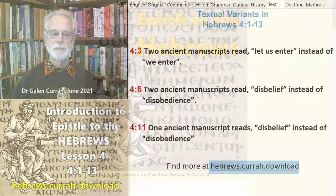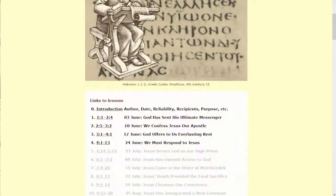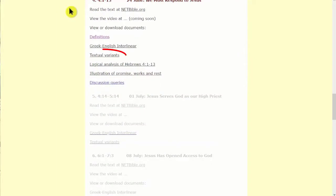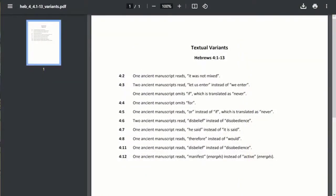We launch a web browser, type in hebrews.curragh.download, and we're brought to this page. We go to Links to Lessons and click on Lesson 4. This brings us to a section of the page where we can choose to view textual variants. Here you have several more examples.